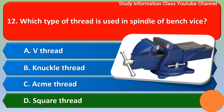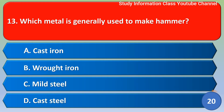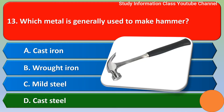Next question: which metal is generally used to make a hammer? Options: A) cast iron, B) wrought iron, C) mild steel, D) cast steel. The correct answer is option D, cast steel.